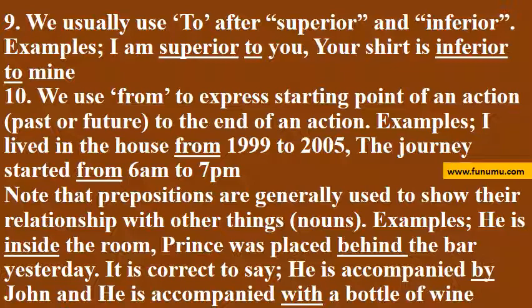10. We use from to express the starting point of an action, past or future, to the end of an action. Examples: I lived in the house from 1999 to 2005. The journey started from 6 a.m. to 7 p.m. Note that prepositions are generally used to show their relationship with other things and nouns. He is inside the room. Prince was placed behind the bar yesterday. It is correct to say: he is accompanied by John, and he is accompanied with a bottle of wine.